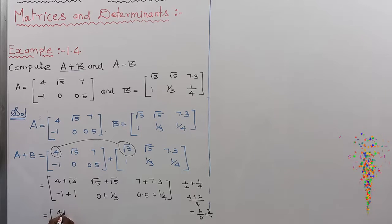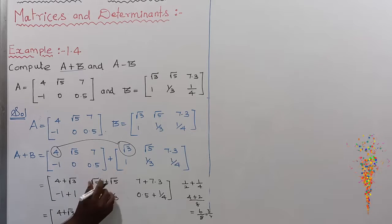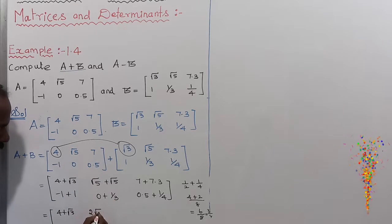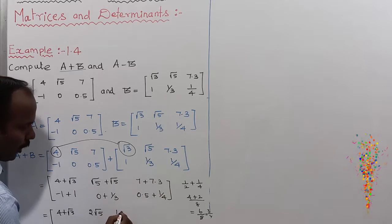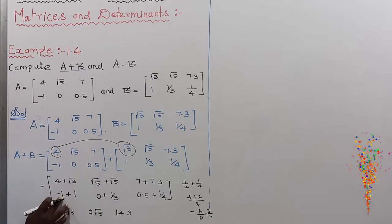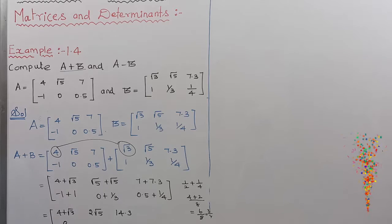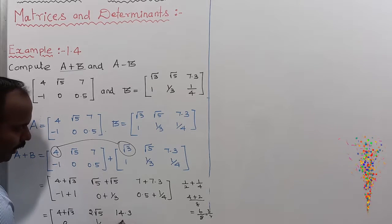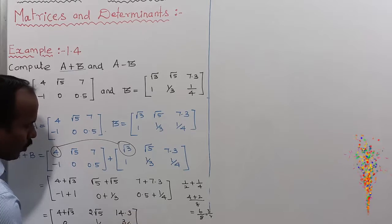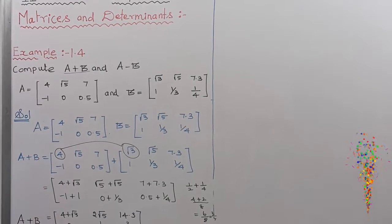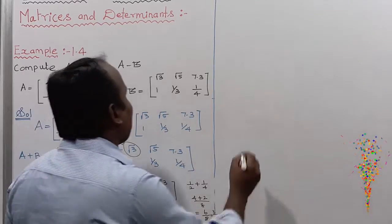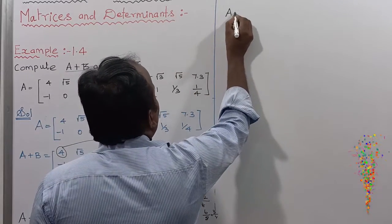So A plus B equals [[4+√3, 2√5, 14.3], [0, 1/3, 3/4]]. The first element is 4 plus √3, the second is √5 plus √5 which is 2√5, the third is 7 plus 7.3 equals 14.3. Second row: minus 1 plus 1 is 0, then 1/3, then 3/4.